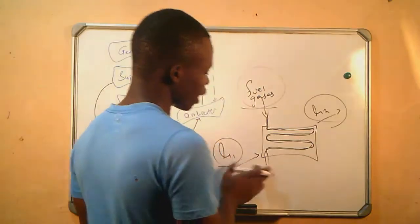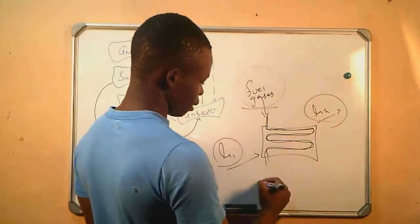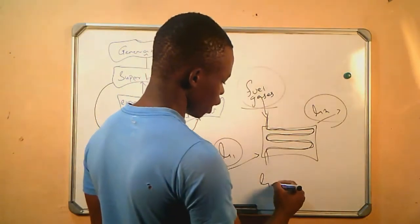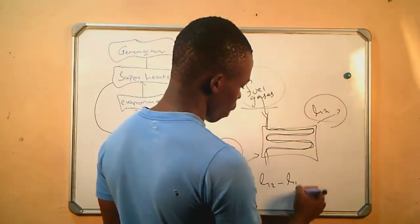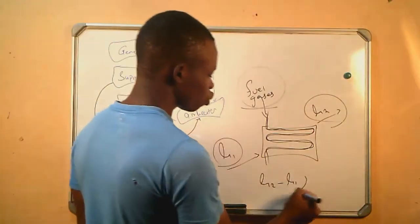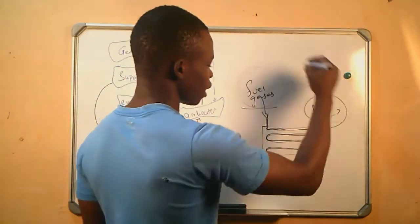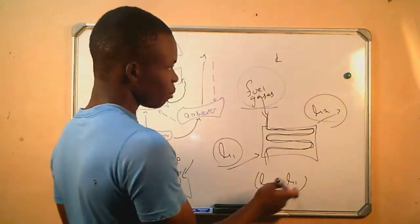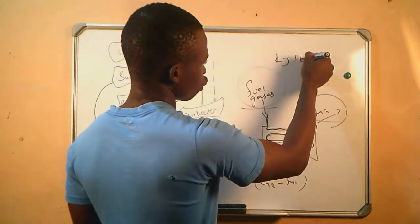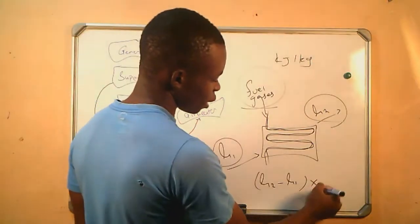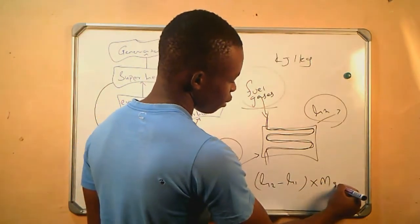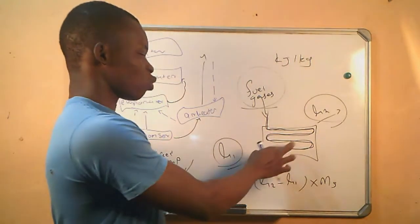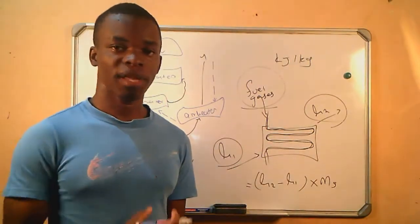To get the heat energy that was gained by the water from the economizer, we are going to say H2 minus H1. This will give us the specific enthalpy, since the SI unit from the steam table is kilojoules per kilogram. We then multiply by the mass of the steam to get the actual amount of heat that was received by the water from the economizer.